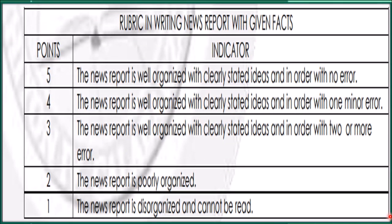These are the indicators in the rubrics. Five points: the news is well organized with clearly stated ideas and order with no error. Four points: the news report is well organized with clearly stated ideas and order with one minor error. Three points: well organized with two or more errors. Two points: the news report is poorly organized. One point: the news report is disorganized and cannot be read. We must be aware of what we should write.